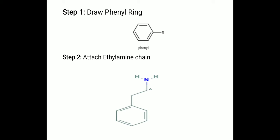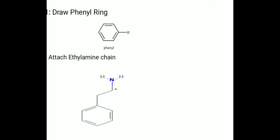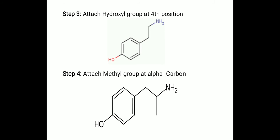Here are the four steps to remember the structure of hydroxyamphetamine. Step one: draw a phenyl ring. Step two: attach an ethylamine chain to the phenyl ring. Step three: attach a hydroxy group at the fourth position. Step four: attach a methyl group at alpha carbon.